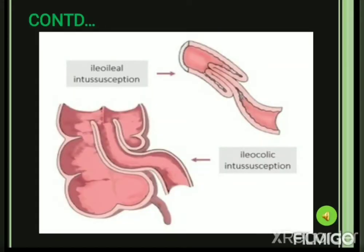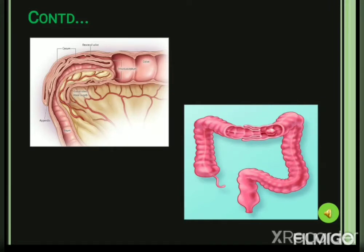This picture shows the types of intussusception: ileo-ileal, in which the ileum is invaginated into the ileum, and ileocolic, in which the ileum is telescoped into the colon. Another picture shows ileocecal and colocolic types: ileocecal is where the ileum telescopes into the cecal region where the small intestine joins the large intestine, and colocolic is where the proximal colon telescopes into the distal colon.